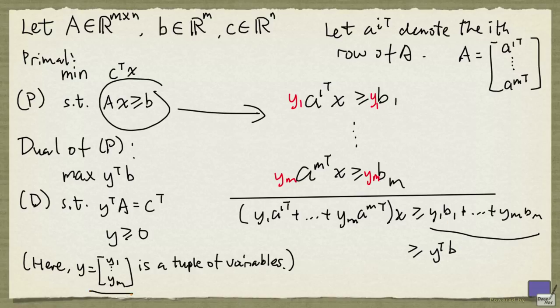And this can be written more succinctly as y transpose b, with y being the tuple y1 to ym. And over here, we have y transpose times a times x. Because y transpose times a is c transpose, we have c transpose x, at least y transpose b.